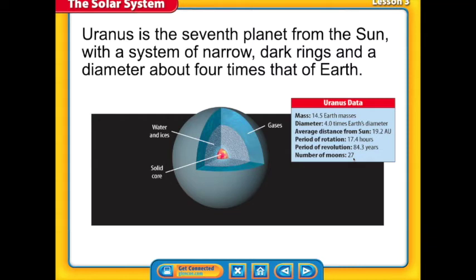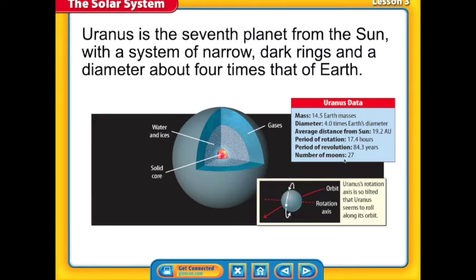The second bullet is axis of rotation is tilted on its side. Uranus rotation axis is so tilted that Uranus seems to roll along its orbit. Some scientists think that Uranus at one time was hit by another large planet and knocked it over on its side. And then the third bullet point for Uranus is how far it is from the sun: 19.2 AUs from the sun.